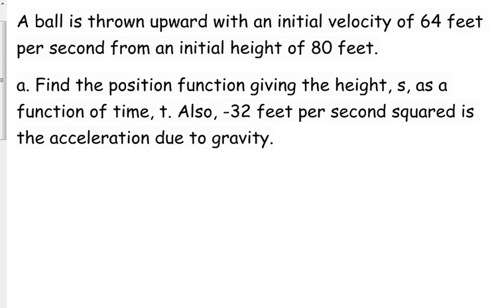Where that comes from is this idea right here. If we start with the acceleration due to gravity, A of t equals negative 32, and we're trying to get back to the position function, we're going to take the antiderivative. So V of t is going to be negative 32t plus C.